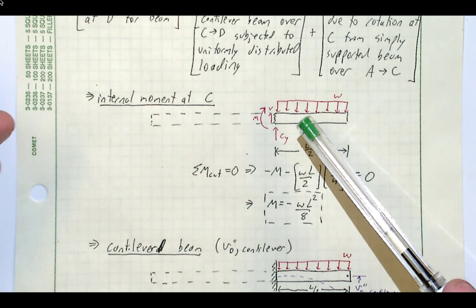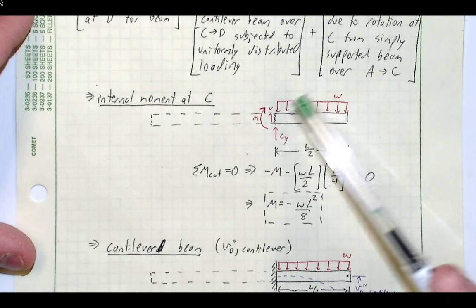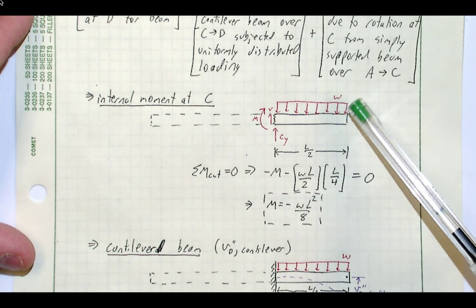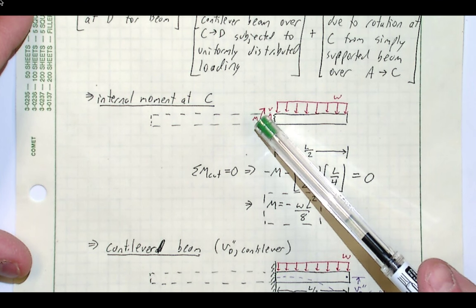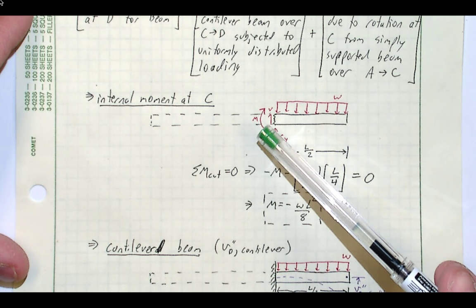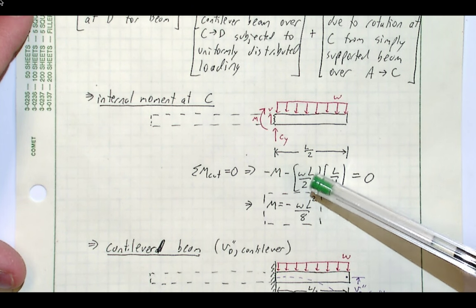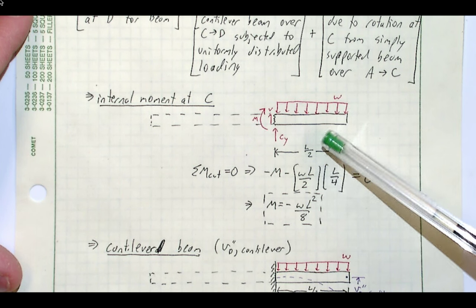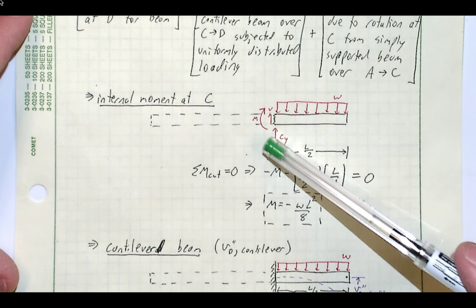The first step of skill four is finding the internal moment at C, at the beginning of the overhang for the simply supported beam. We make a cut section including only the overhang portion. The uniformly distributed load has a resultant force of wL/2 (span is L/2), acting at a moment arm of L/4 (half of L/2). Taking moments about the cut section, the internal moment is M = -wL²/8, meaning the moment acts to bend the beam into a frown — downward on both sides.